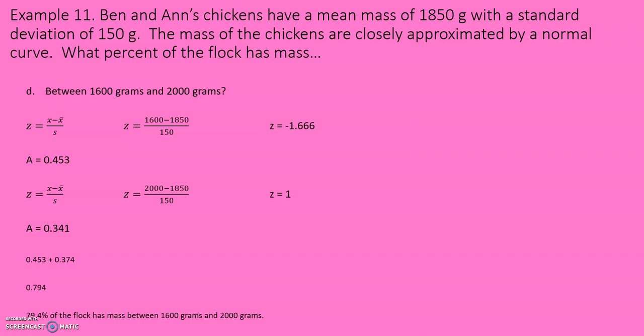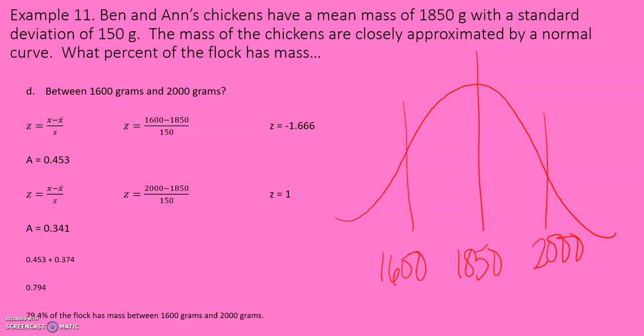What percent of the flock has mass between 1,600 grams and 2,000 grams? Draw the picture. Find the Z-scores. Find the A-values. 0.453, 0.341. Add them together. 79.4% of the flock has mass between 1,600 grams and 2,000 grams.